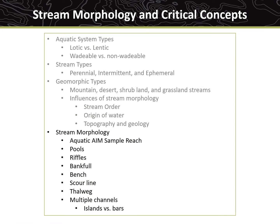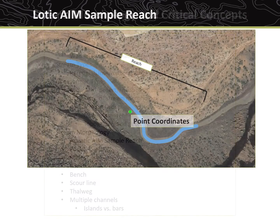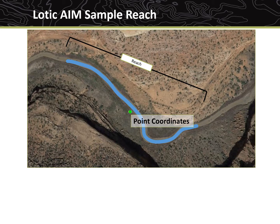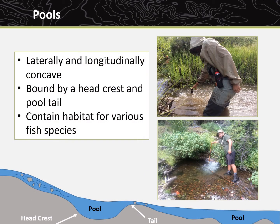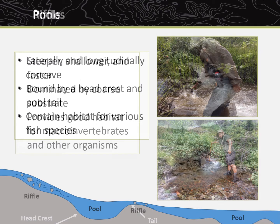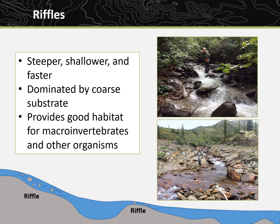We will now look at stream morphology at a more local scale and discuss common parts of streams and the critical features measured during Lotic AIM sampling. Lotic AIM assesses stream morphology along a length of stream called a reach. Reaches are scaled to the size of the stream to capture numerous replicates of common habitat features, such as pools and riffles. Pools are depressions in the stream bed that are laterally and longitudinally concave, bound by a head crest and a pool tail, and tend to have deeper water providing habitat for various fish species. Riffles are lengths of stream that are steeper, shallower, and dominated by coarse substrate particles and faster velocities compared to pools at base flow, and are important because they provide good habitat for macroinvertebrates requiring well oxygenated water and substrates with low amounts of fine sediment.